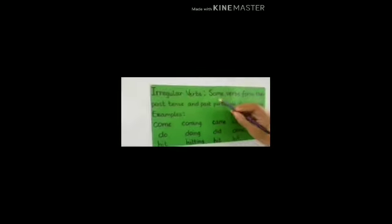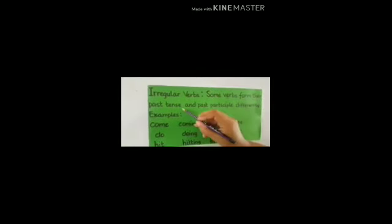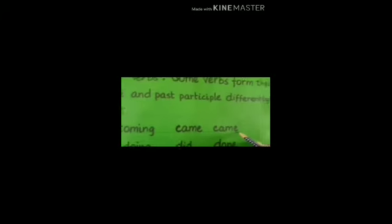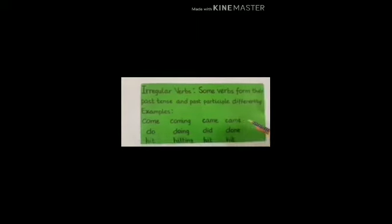Irregular verbs. Some verbs form their past tense and past participle differently, so they are known as irregular verbs. With regular verbs, we only added D or ED. But irregular verbs have their past and past participle formed differently, which is why they are called irregular verbs.